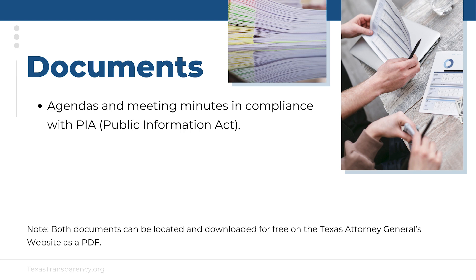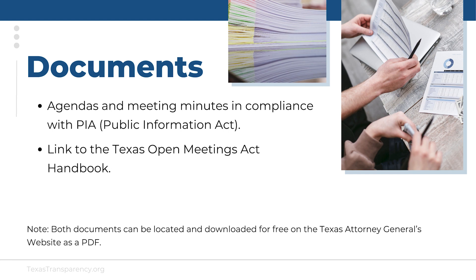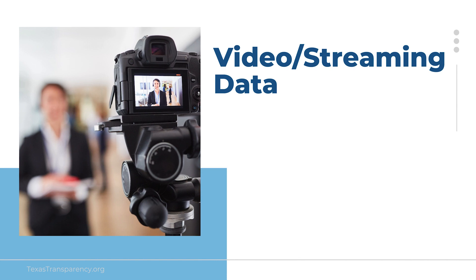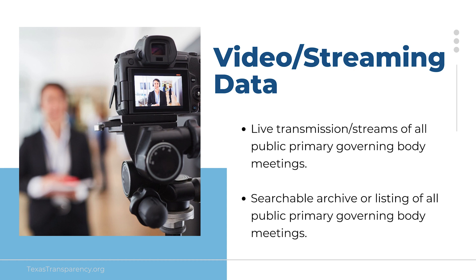Post the last three complete years of agendas and meeting minutes in compliance with the Public Information Act, with the most recent being not more than 90 days old. A link to or copy of the most recently published Texas Open Meetings Act handbook, and a link to or copy of the most recently published Public Information Act handbook. All live stream transmissions of governing body meetings must be available as they occur, along with a shareable archive of all governing body meetings for the last 90 days for download or streaming. Both audio and visual meetings are acceptable. Videos hosted on external websites like Facebook or YouTube must include directions on how to obtain a copy, and login credentials cannot be required.